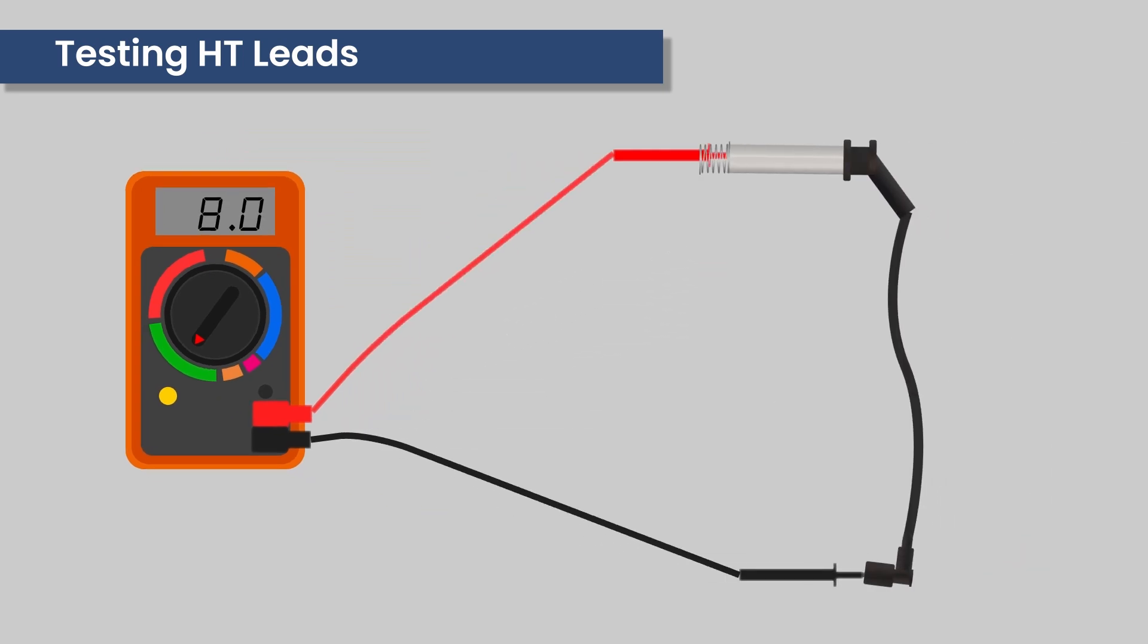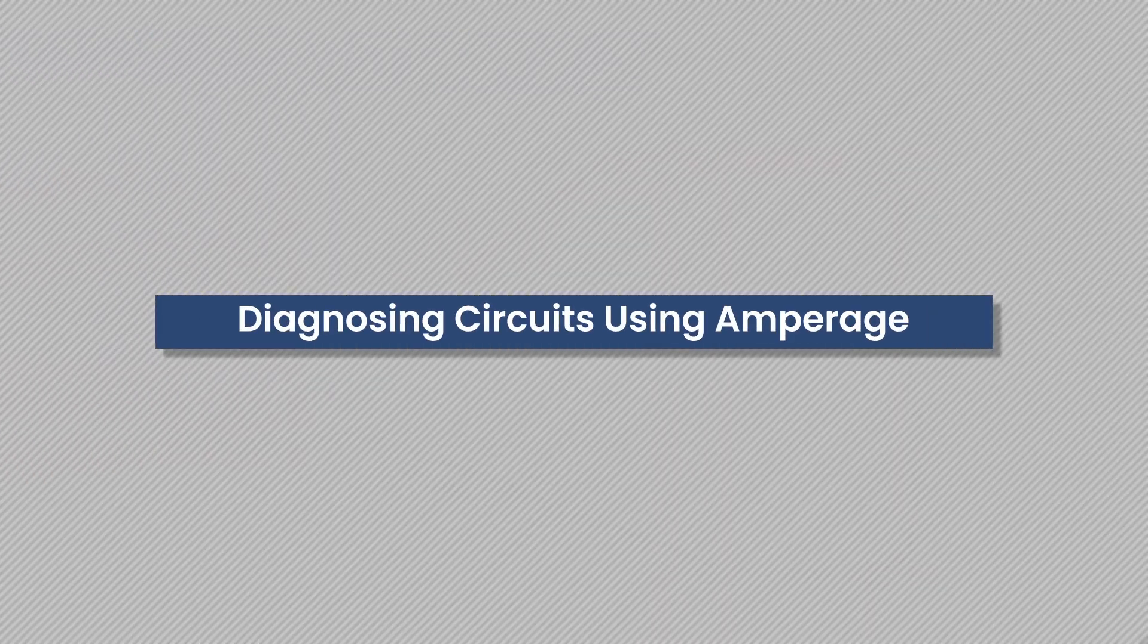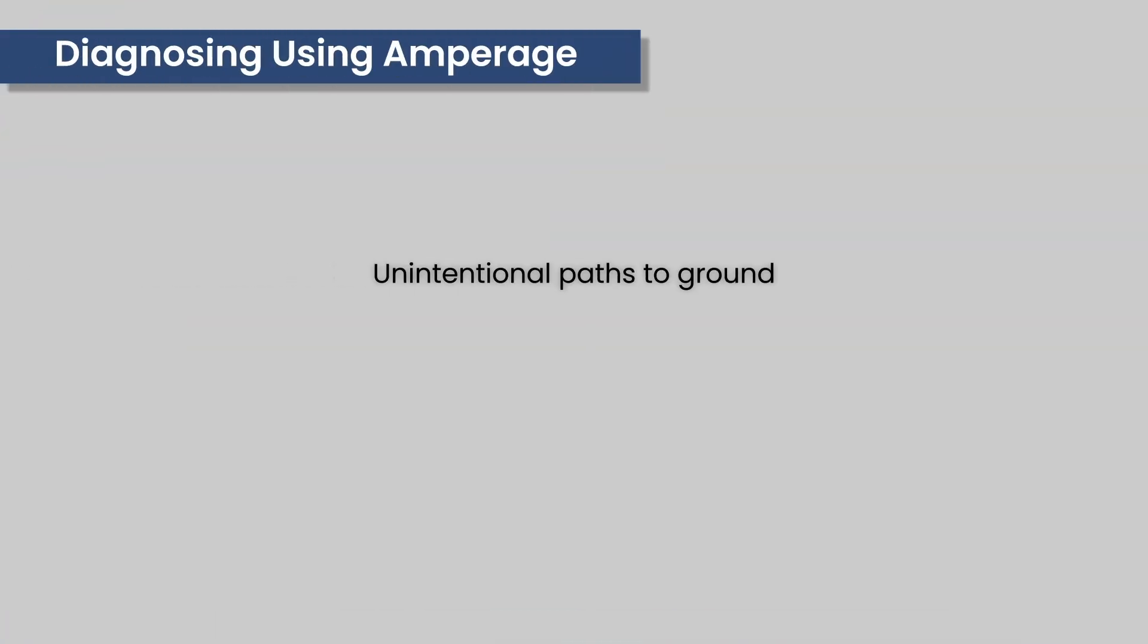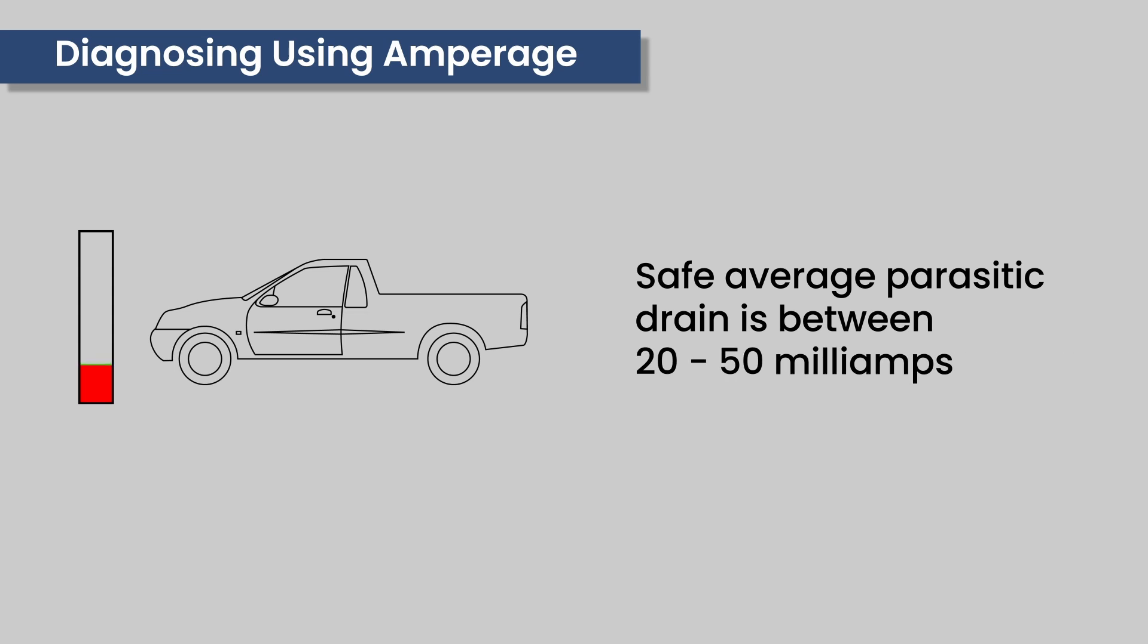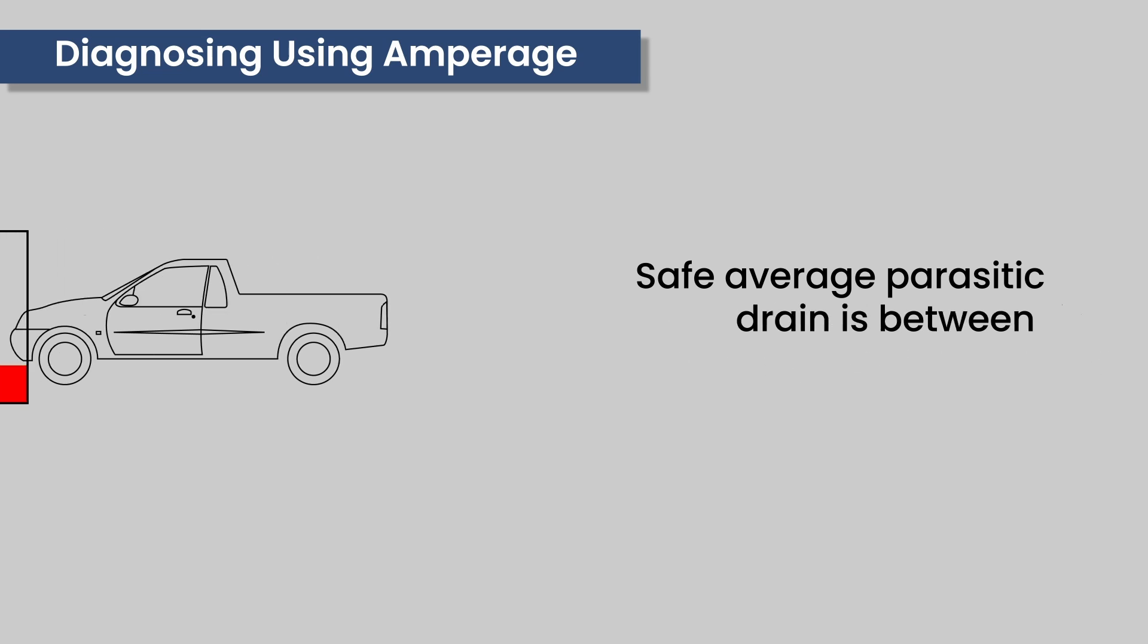Diagnosing circuit faults using amperage: this is where we look at unintentional paths to ground or what we call parasitic current drains. This will cause the battery to drain more than usual while the car is off. The general average can be between 20 to 50 milliamps.